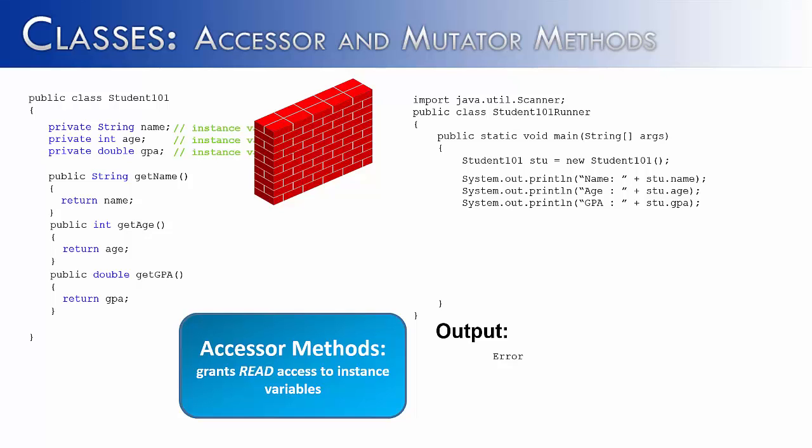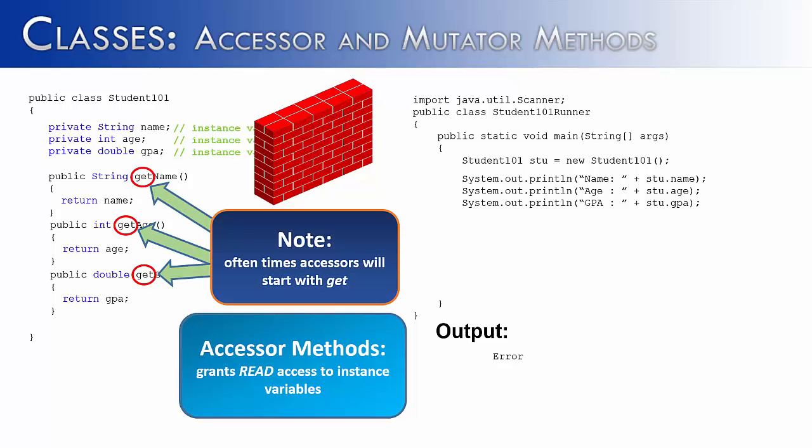Accessor methods grant read access to the instance variables of a class. You can see they're all non-void methods. Because they're in the same class as Student101, they have access to the instance variables name, age, and GPA. I added the word get in front of the method name. The word get is there often with accessor methods because that's exactly what they do. They get some kind of information from the class.